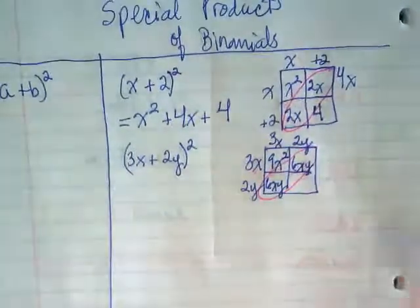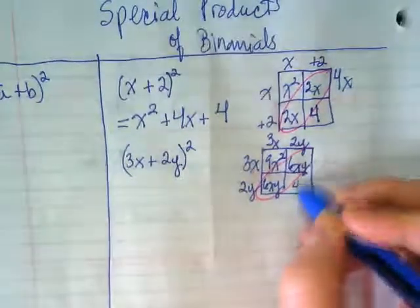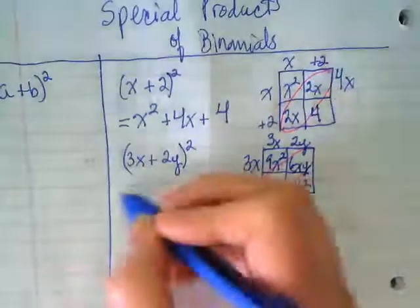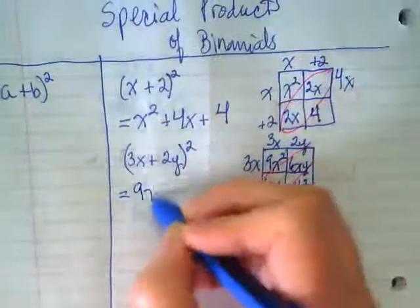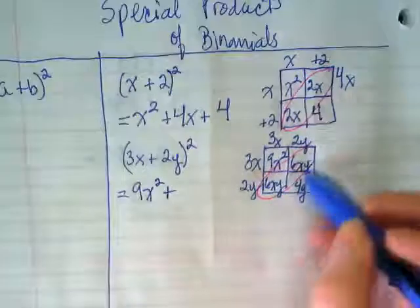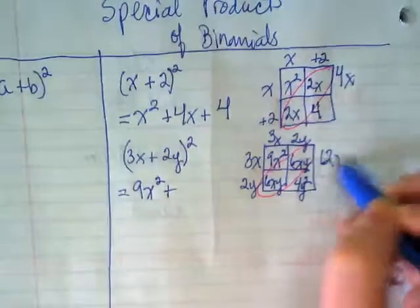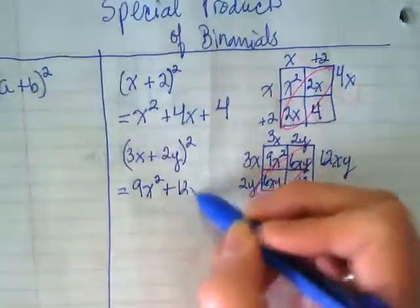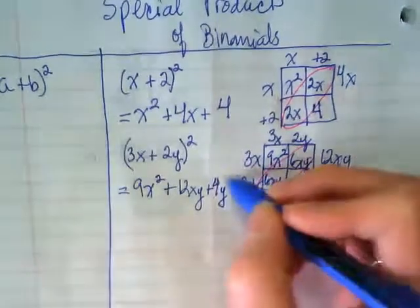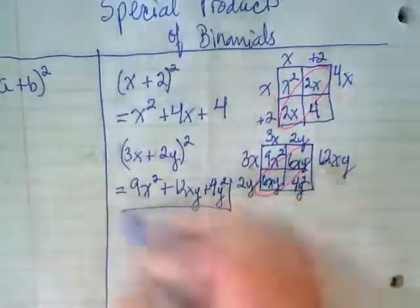And then down in this box, we're going to end up with 4y². So we rewrite this as 9x² plus, what's our combined like terms? 12xy. Plus 4y². And we leave it like that.